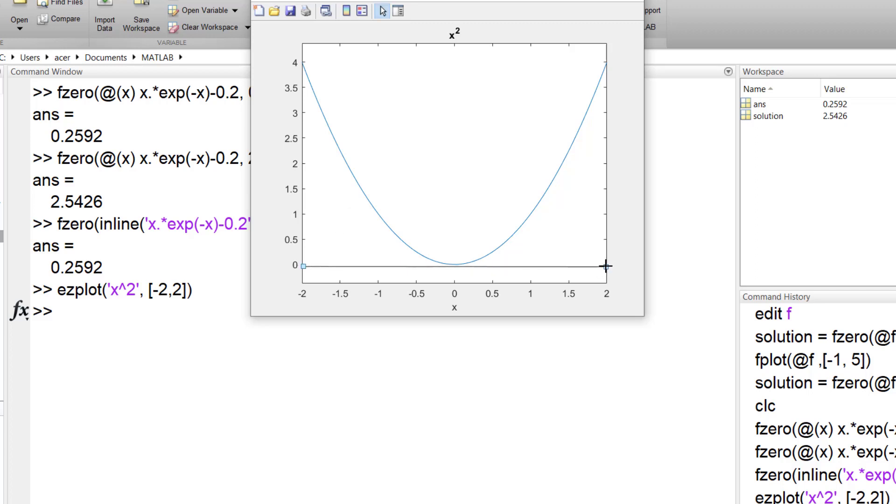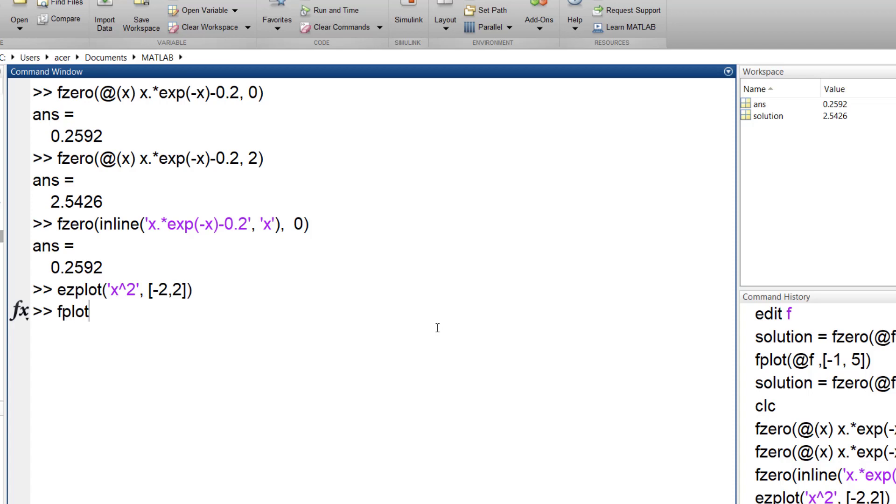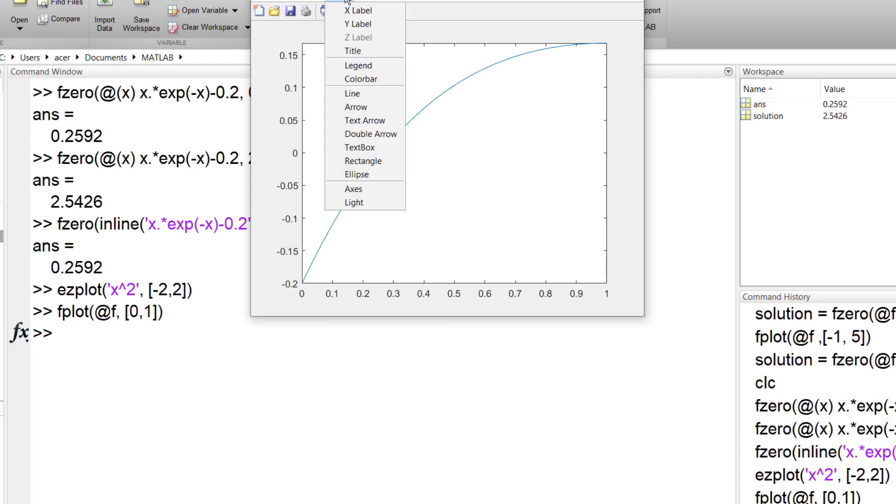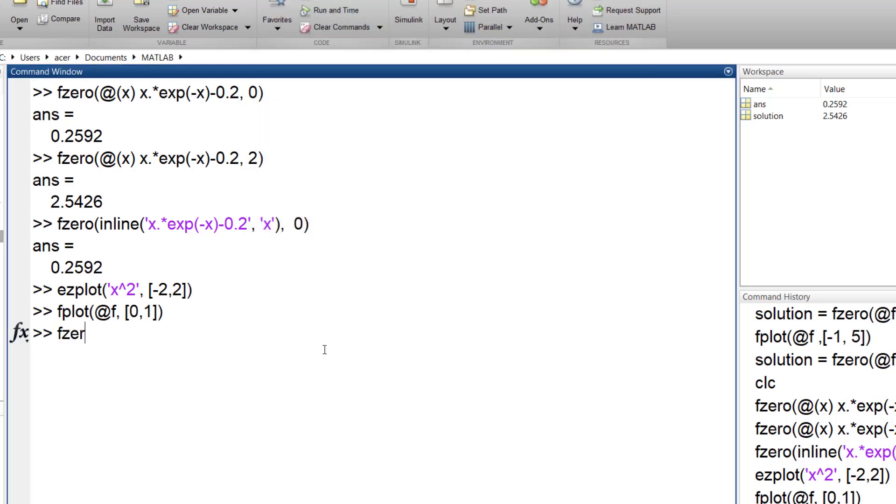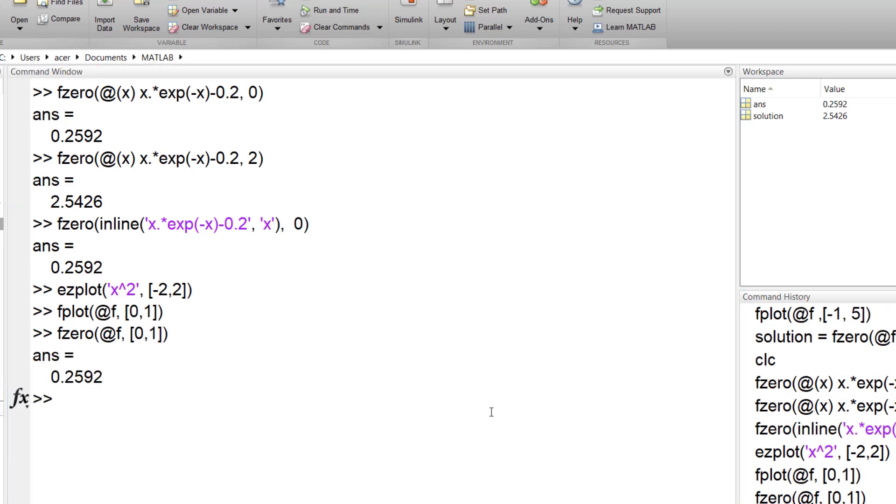If you initially know an interval in which the function crosses x-axis use that interval as your first guess. Just remember that the function must have different signs in these points.